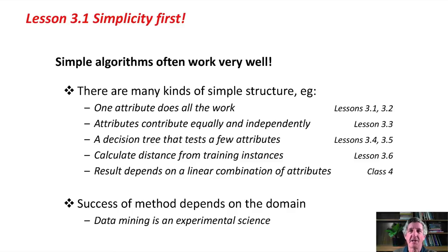There are many different kinds of simple structure. For example, it might be that one attribute in the dataset does all the work — everything depends on the value of one attribute. Or it might be that all of the attributes contribute equally and independently. Or a simple structure might be a decision tree that tests just a few attributes. Or you might calculate the distance to the nearest training sample, or the result might depend on a linear combination of attributes. We're going to look at all of these simple structures in the next few lessons.